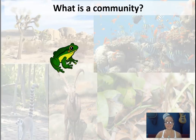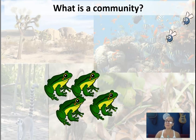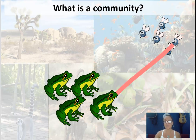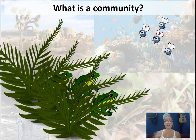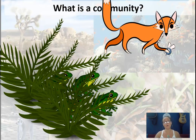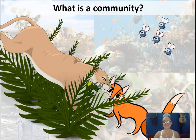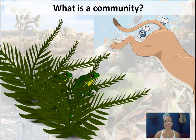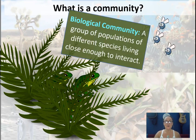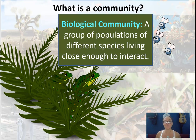So what is a community? Here I have a population of frogs, and those frogs are going to rely on food — they rely on populations of insects. So right here we already have two different populations. The frogs may also live along a riparian habitat, like along a stream, using nearby plants for camouflage, shelter, or a home. They also have their own predators — foxes looking for prey, and bobcats. A community in ecology is a group of populations of different species living close enough to interact.